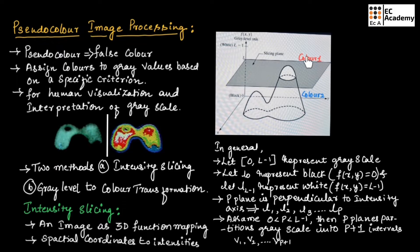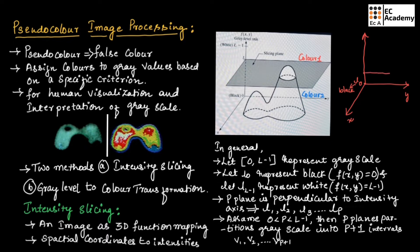Likewise, we can use multiple planes to assign different colors for the image intensity. Taking the x and y axis with the intensity values of the image, at the origin point we consider black, represented as L0. We then take planes at L1, L2, and so on up to Lp. At the origin we have black, and at the higher intensity level L-1 we consider white.